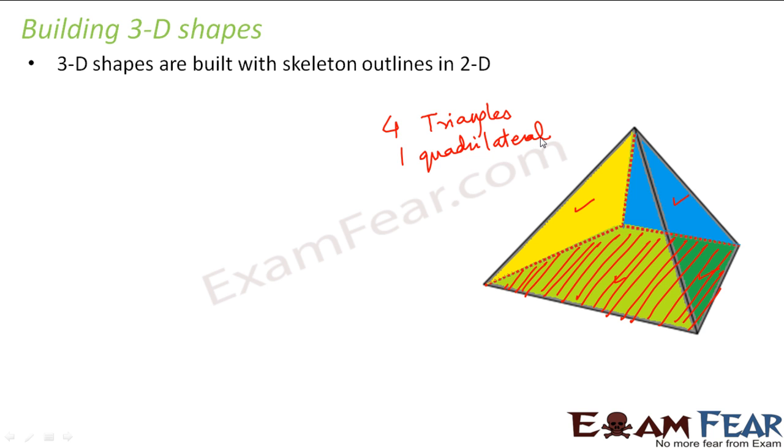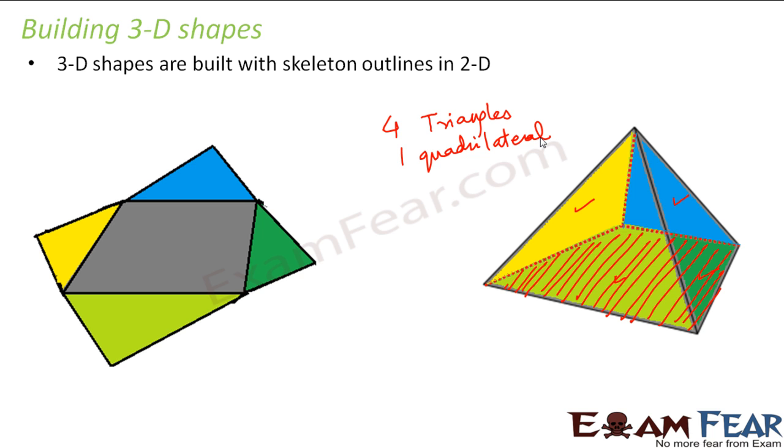So the two dimensional outline would be somewhat like this, where you have a quadrilateral here which will act as the base and you have the triangles like this. Now here I have purposely drawn the triangles in the same color.